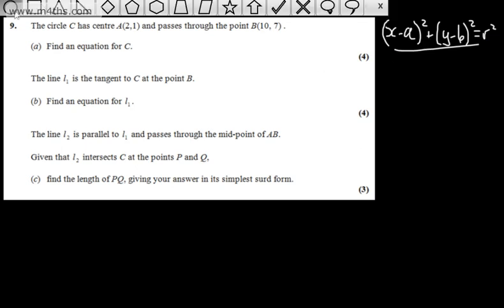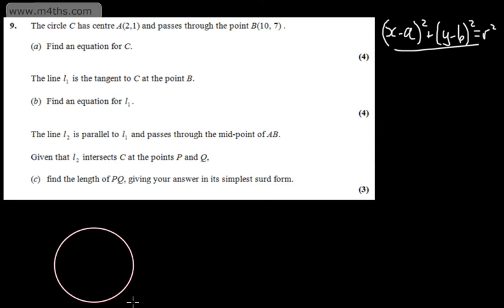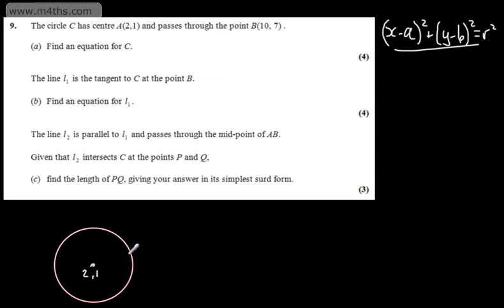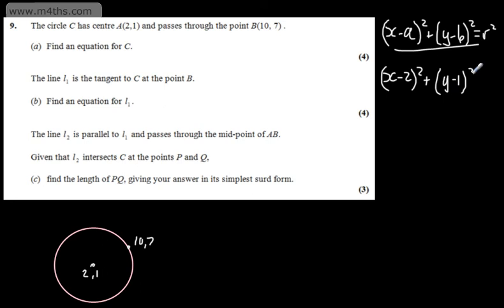I'm just going to draw a quick sketch. We have the point A, which is the centre at (2, 1), and then we have point B at (10, 7). We can see straight away we can put the coordinates of the centre in, so we'll have (x − 2)² + (y − 1)² = r².